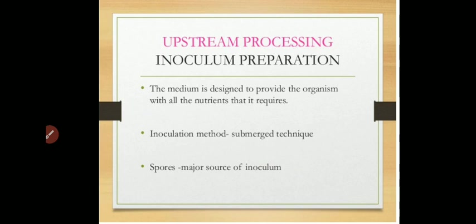Upstream processing basically includes inoculum development, selection of microorganism, and the actual fermentation process. The media is designed according to the needs of the organism, and the organism is provided with all the nutrients required for its growth and multiplication. The inoculum development is carried out with the submerged technique, and spores are the major source used as inocula for inoculation purposes.